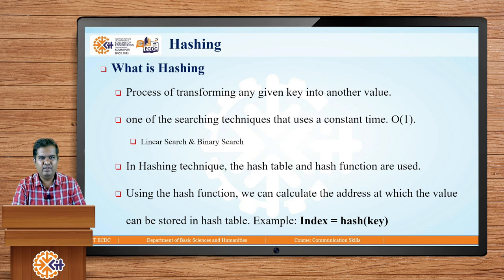Another definition of hashing: it is one of the searching techniques that uses constant time, that is O(1). We have already seen some searching techniques — linear search and binary search. It is your job to find out what the complexity of linear search and binary search is. Definitely the complexity of hashing is very less compared to linear search and binary search, and that is O(1).